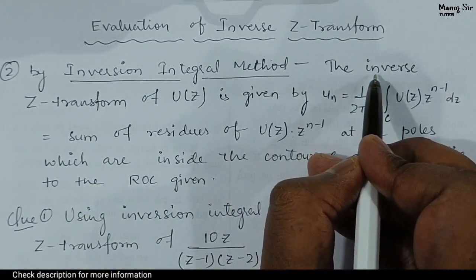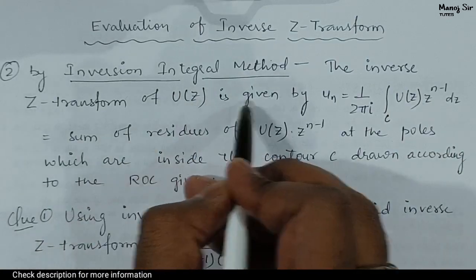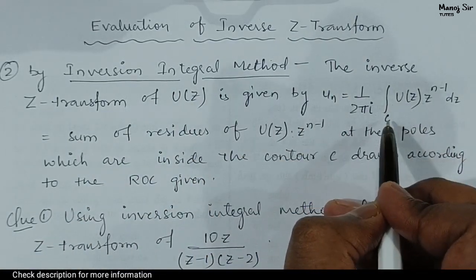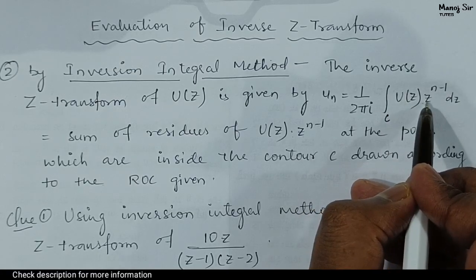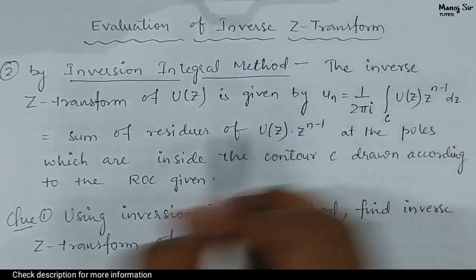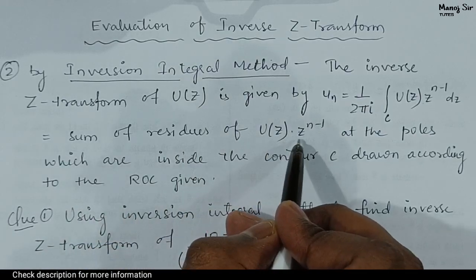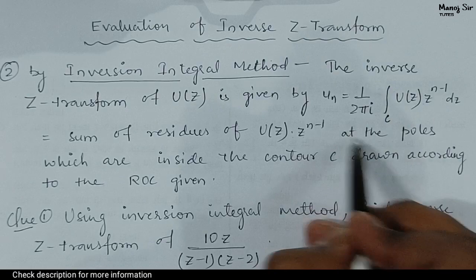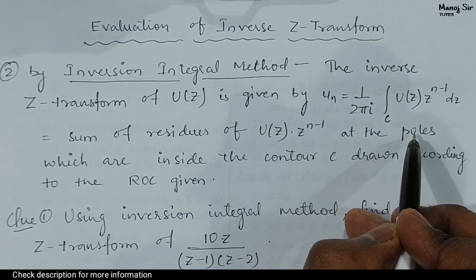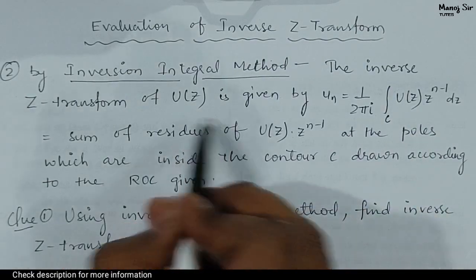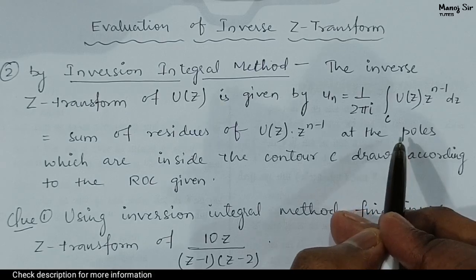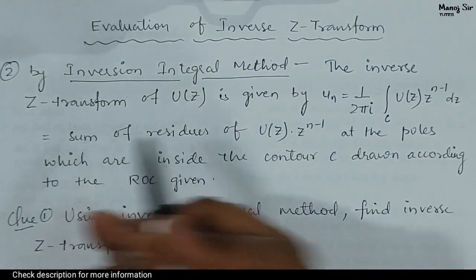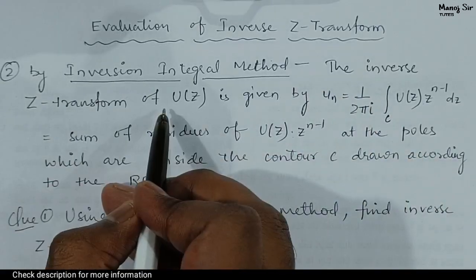To repeat: the inverse Z transform of U(z) is given by u(n), using the formula 1 upon 2πi times the integration under curve C of U(z) into z power n minus 1 dz, which equals the sum of residues of U(z) into z power n minus 1 at the poles. This means we have to find the poles, then find the residues at those poles, then sum those residues to get u(n).